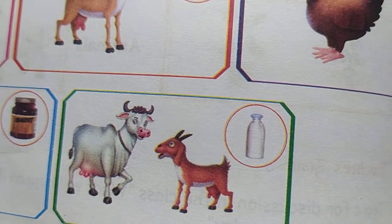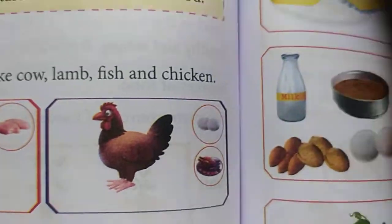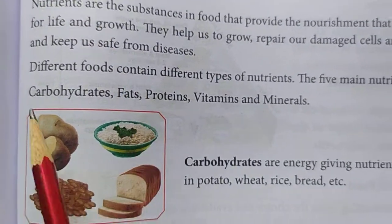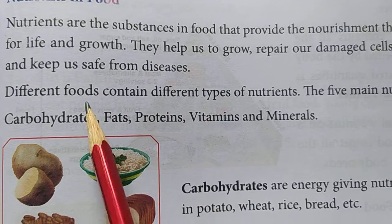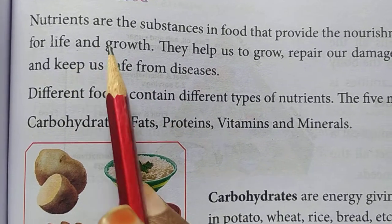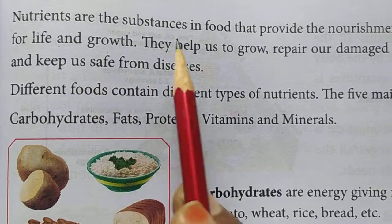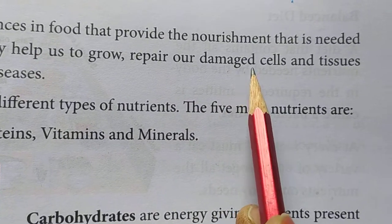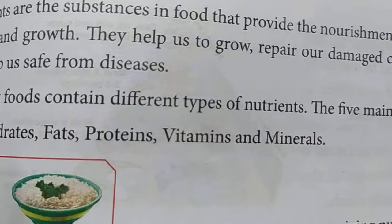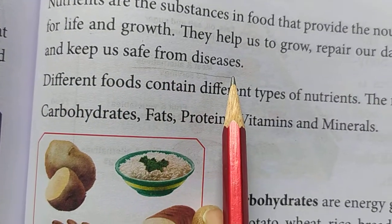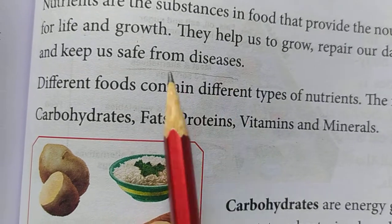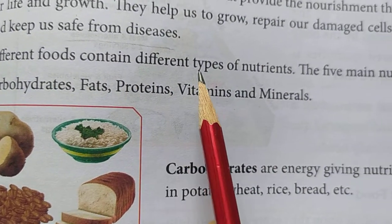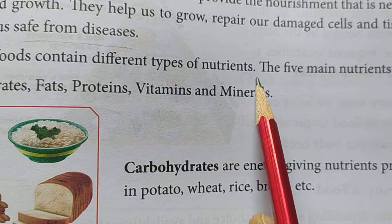All these are taken as part of our food. Now about the nutrients of food. Our food contains some nutrients which help us to grow, help us to repair damaged cells and tissues, and keep us safe from diseases. Different foods contain different types of nutrients.